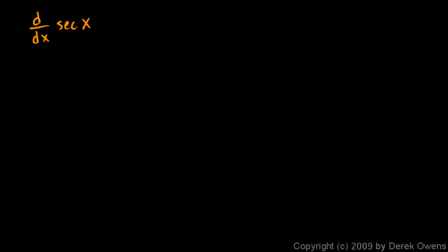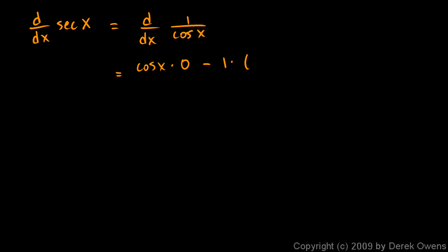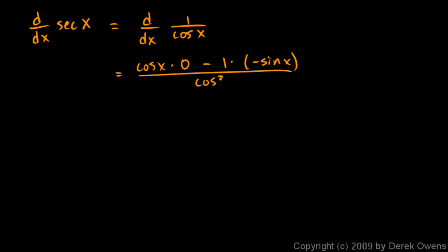Now let's differentiate the secant function. The derivative with respect to x of secant x — well, secant is 1 over cosine — so this is the derivative of 1 over cosine x. Applying the quotient rule: low d high, but the derivative of the 1 up top is 0, minus high d low, and the derivative of cosine is negative sine, all over cosine squared x. So we have a minus negative sine x, giving us sine x over cosine squared x.